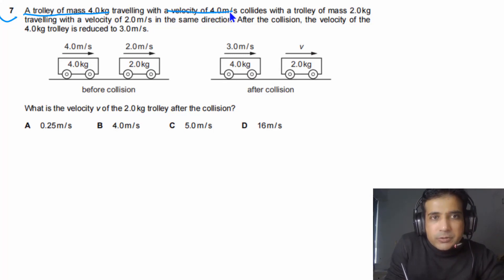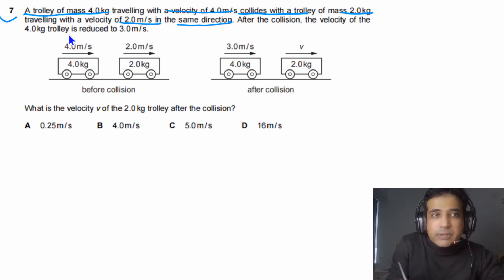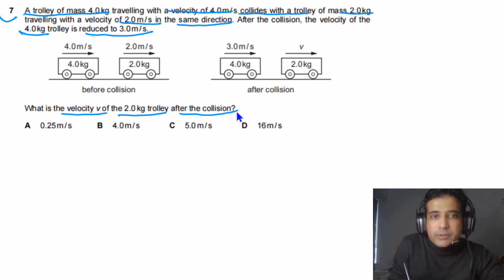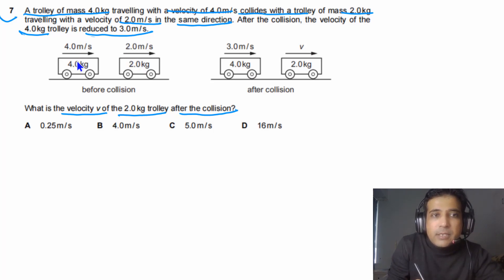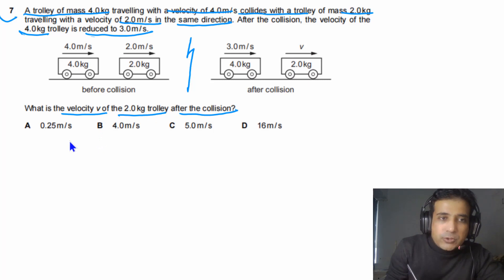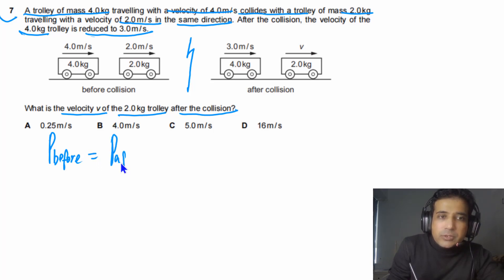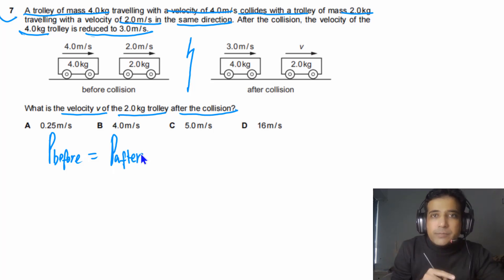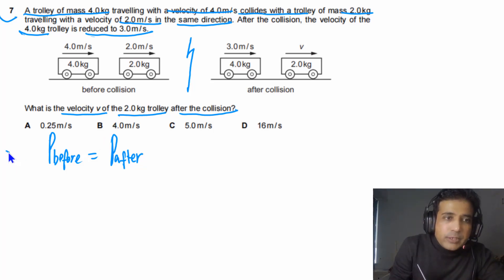For Question 7, a trolley of mass 4 kg travelling at 4 m/s collides with a trolley of mass 2 kg travelling at 2 m/s in the same direction. After the collision, the 4 kg trolley's velocity is reduced to 3 m/s. We need to find the velocity of the 2 kg trolley after the collision. This uses conservation of momentum — since there is no net external force, this is an isolated system and momentum is conserved.